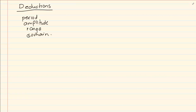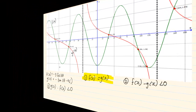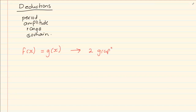Now what else they can do is they can start giving you equations. If we take the following two graphs, when they ask us things like where is f(x) equal to g(x) — when they use the word equal — what they mean is where are the two graphs cutting each other.